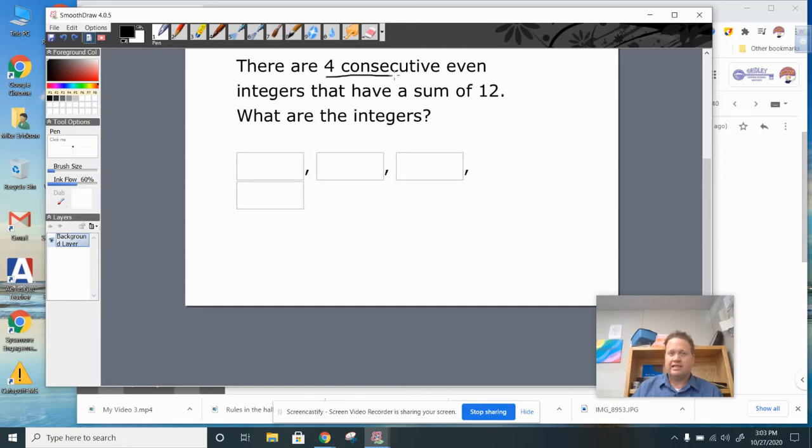If we have four consecutive even integers, that would be things like this: 2, 4, 6, 8. That's four of them.